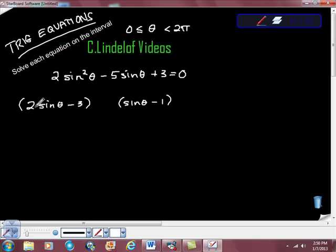I'm going to do a little test here. 2 sine theta times negative 1 is negative 2 sine theta. Negative 3 times sine theta is negative 3 sine theta. Negative 2 sine theta plus negative 3 sine theta is, in fact, negative 5 sine theta, so I'm just doing a little test here.